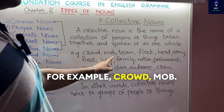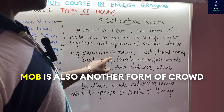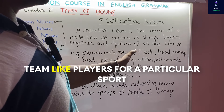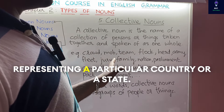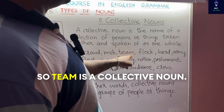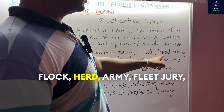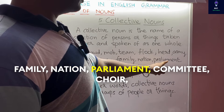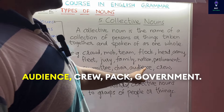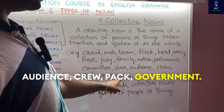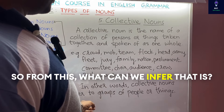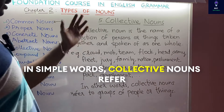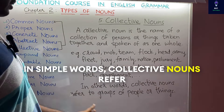For example: crowd, mob — a collection of people. Team — players for a particular sport representing a country or state. Other examples include flock, herd, army, fleet, jury, family, nation, parliament, committee, choir, audience, crew, pack, government. In simple words, collective nouns refer to groups of people or things.